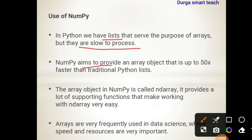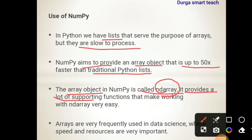NumPy aims to provide an array object that is 50 times faster than a traditional Python list. So NumPy arrays are much faster than lists. The array object in NumPy is called ndarray. NumPy provides a lot of supporting functions and makes working with ndarray very easy — those functions are used to work with arrays very easily.